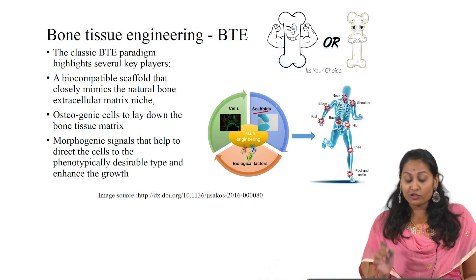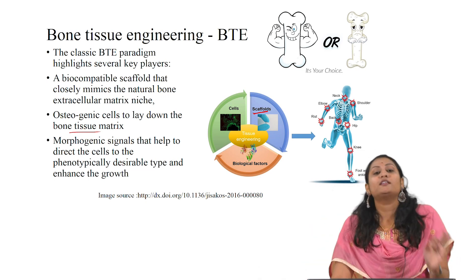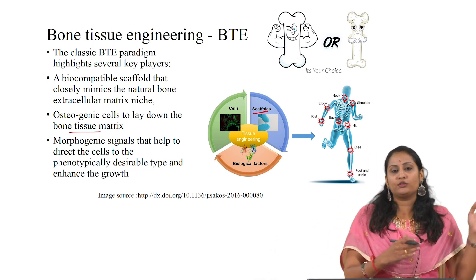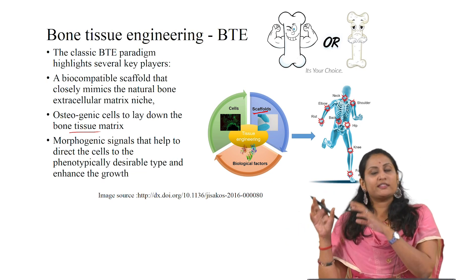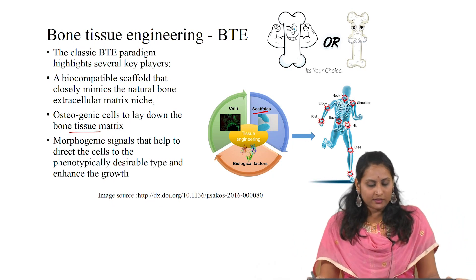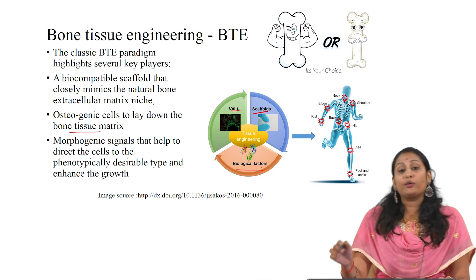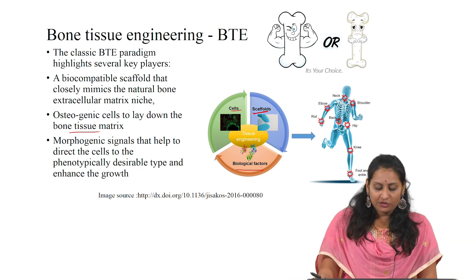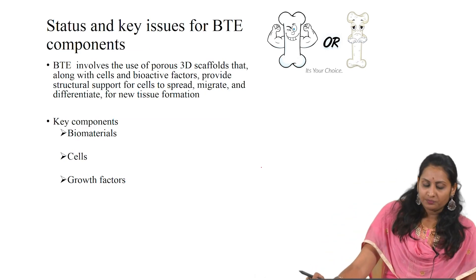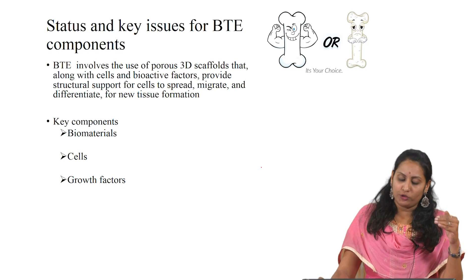We need osteogenic cells to lay down the bone tissue matrix. The third essential component is growth factors, which are morphogenic signals that help direct cells to the phenotypically desirable type and also enhance growth. Scaffolds, cells, and biological factors together comprise the bone tissue engineering triad. In this session we will be dealing in detail about each key component of bone tissue engineering.